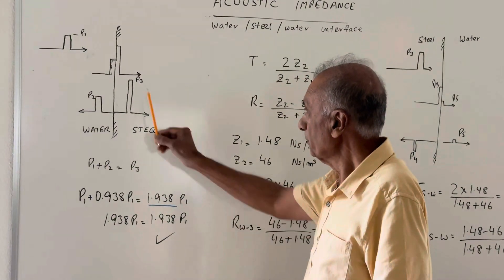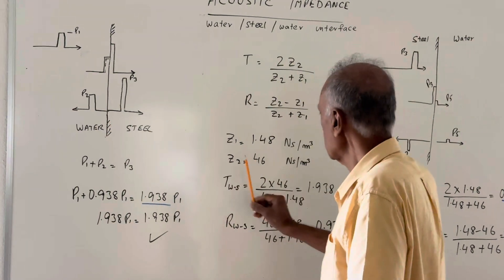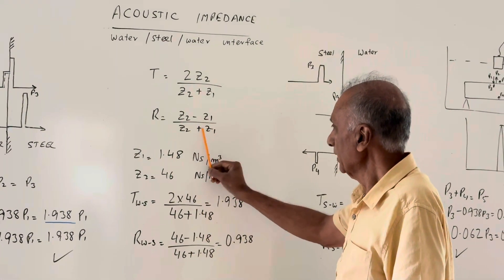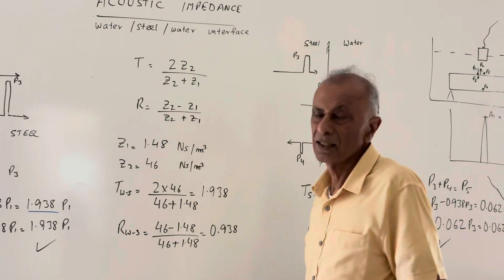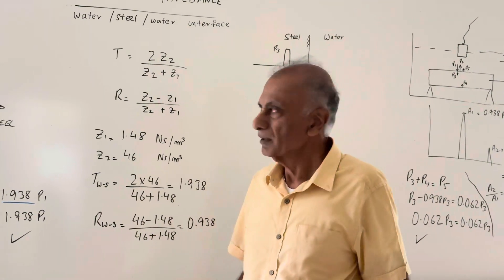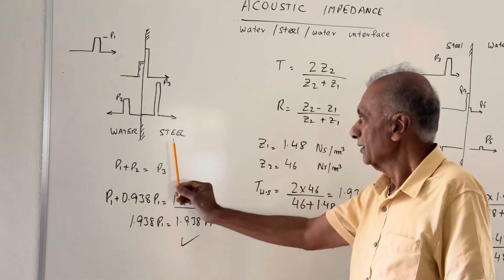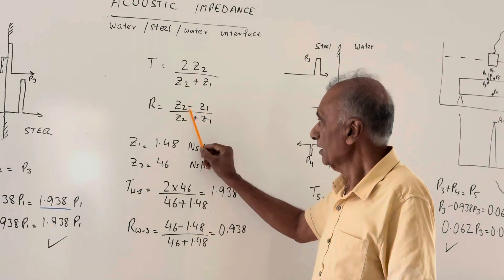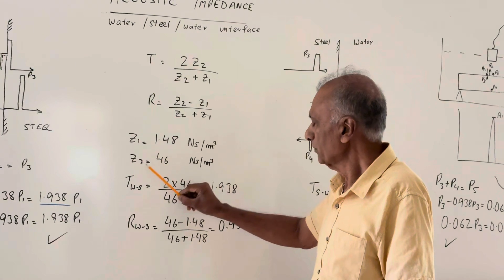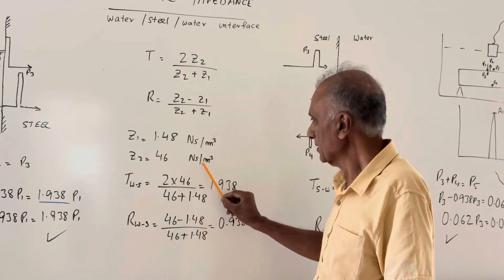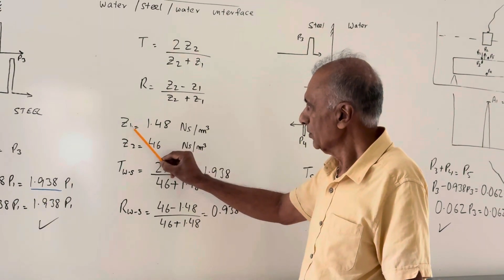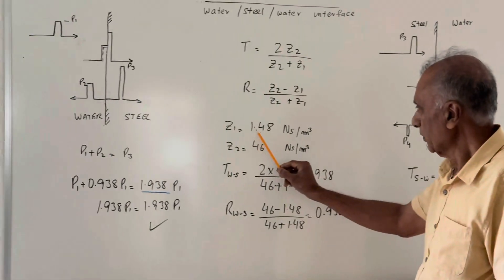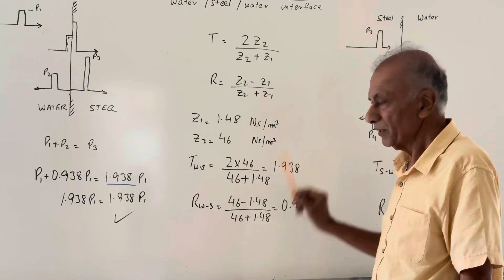P2 equals the reflected one, which is (Z2 minus Z1) divided by (Z2 plus Z1). Z2 and Z1 are the acoustic impedances. This is medium number one and this is medium number two. Z2 is the acoustic impedance of steel, which is 46 Newton-seconds per meter cubed, and Z1 is the acoustic impedance of water, which is 1.48 Newton-seconds per meter cubed.